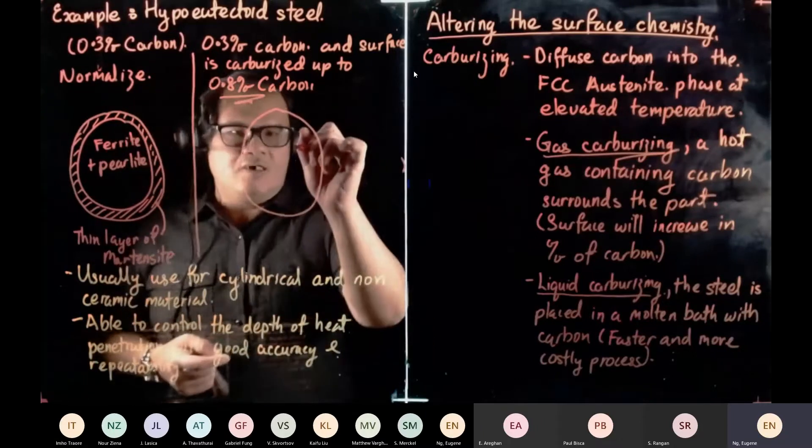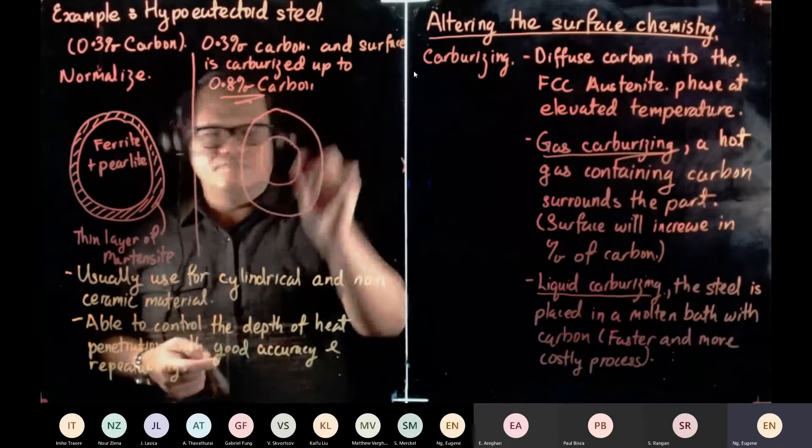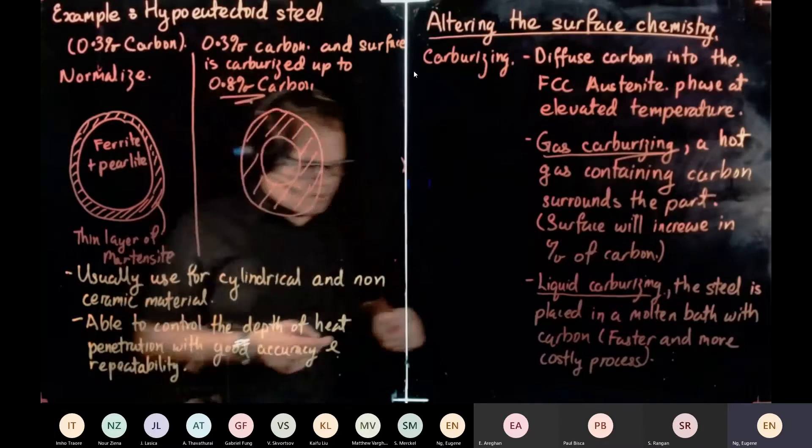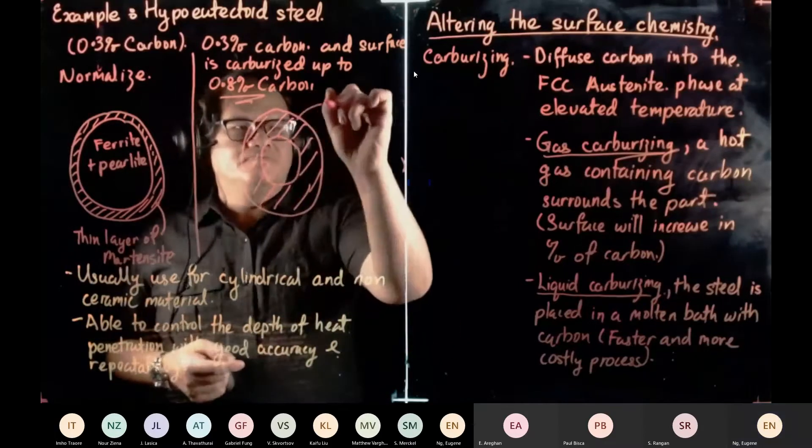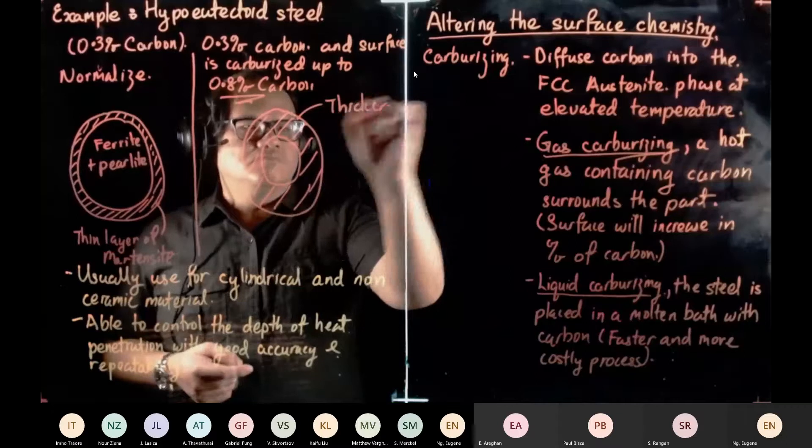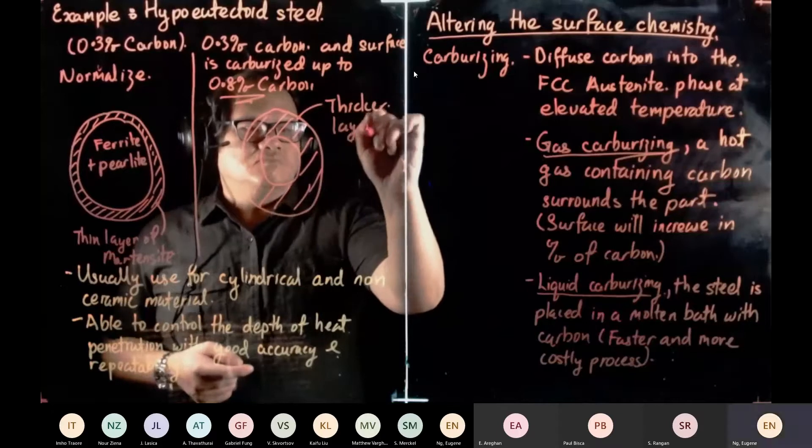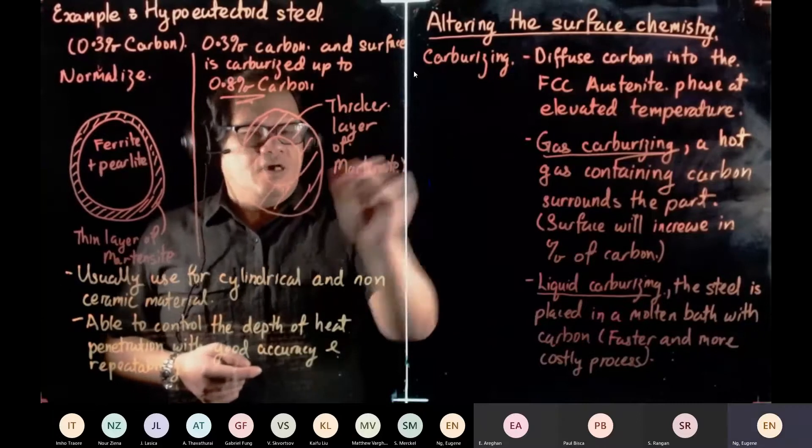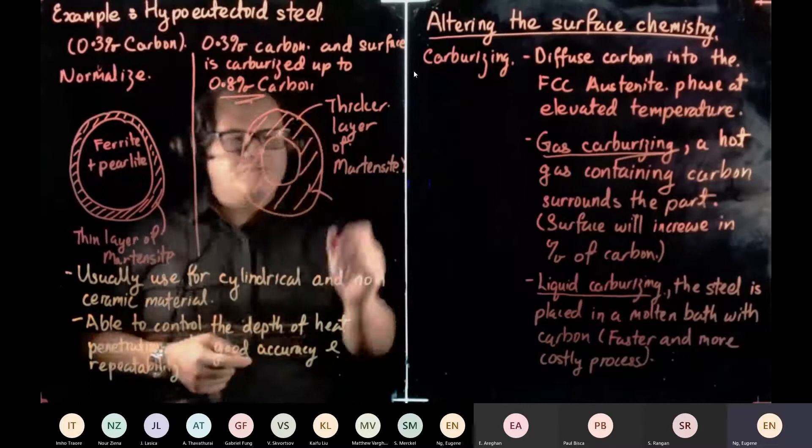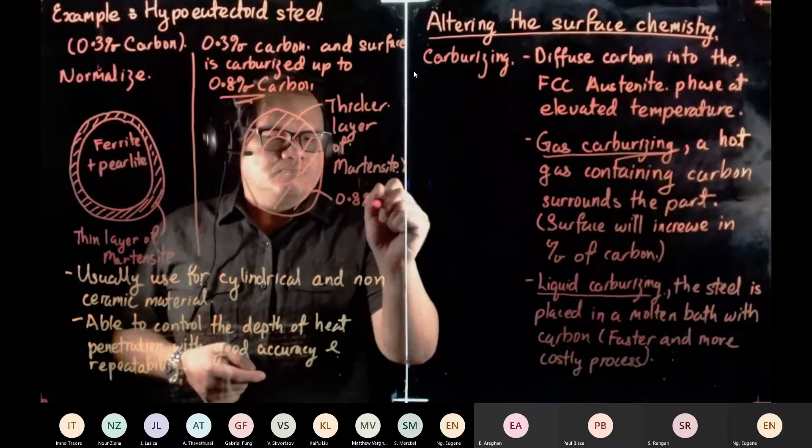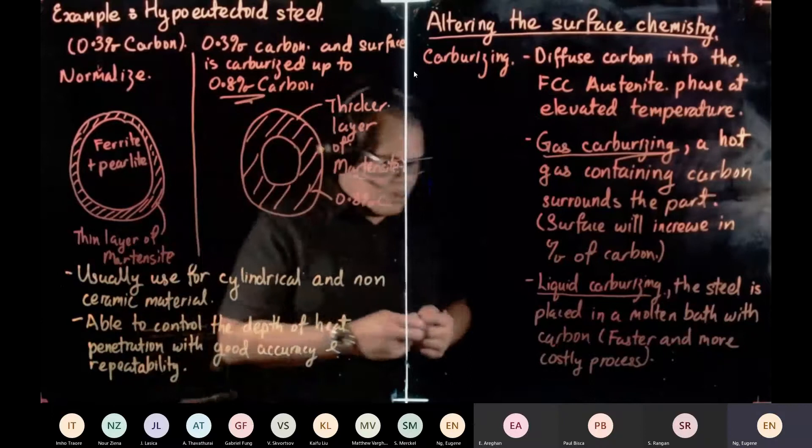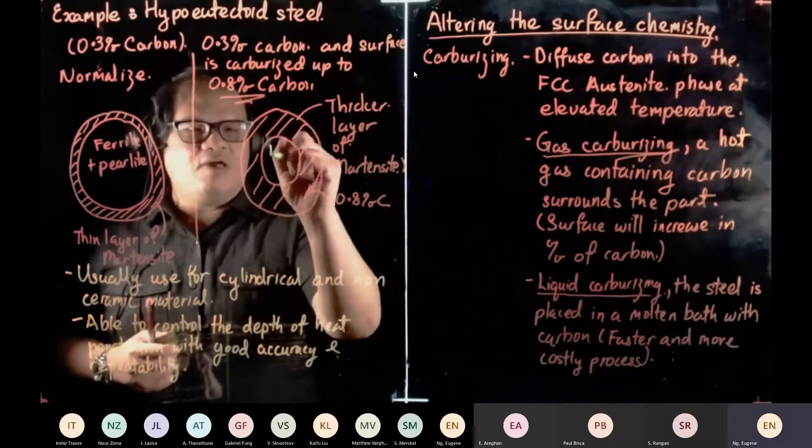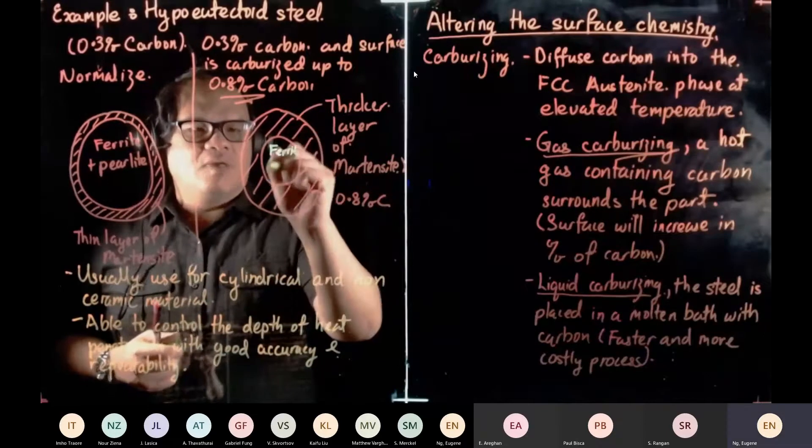So what you'll see over there then, once you do carburizing, what will happen? So for example, the outer diameter is the same. You will have a thicker layer of martensite. So you have a thicker layer of martensite. After you quench, and the surface will have 0.8% carbon.